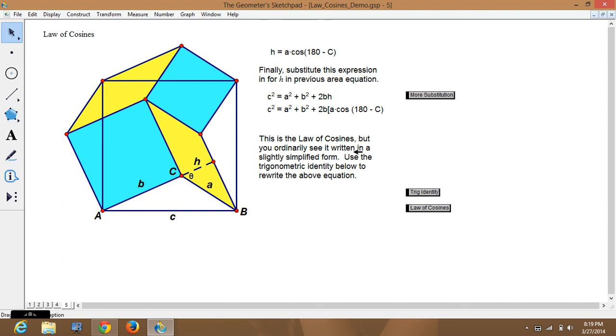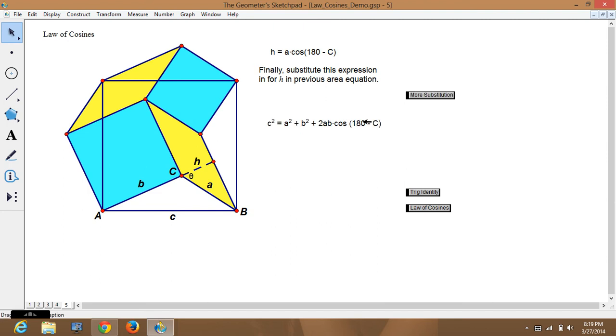This is the law of cosines, but you ordinarily see it written in a slightly simplified form. So, this is the law of cosines. We don't usually write it like this. So, we're going to need to use some information that we already know. Now, this is a little bit tricky, and you'll have to check it on your calculator. But if you have an angle, and you subtract it from 180, and then take the cosine of it, it will be the same as the original angle, but it will be the negative of the cosine.